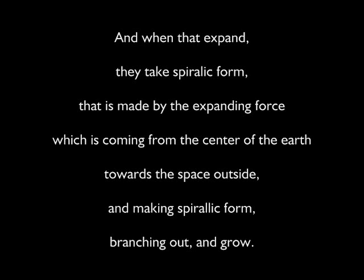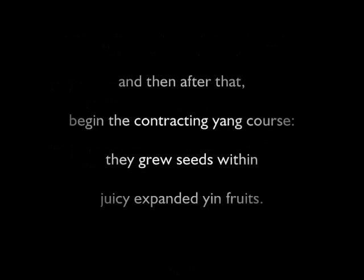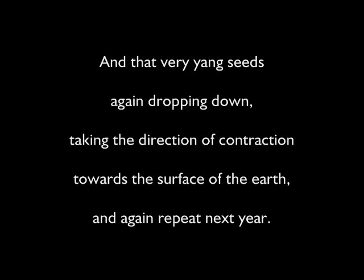Growing in spiraling, branching form, when the plant reaches the ultimate balancing point — which the original seed determines as its height and expanding degree — it starts to blossom, expanding further. After that, contracting yang forces begin, and seeds grow within the juicy, expanded fruit. Those very young seeds again drop down, taking the direction of contraction towards the surface of the earth, repeating the cycle next year.